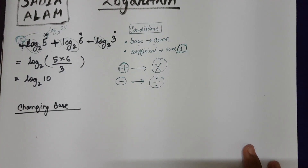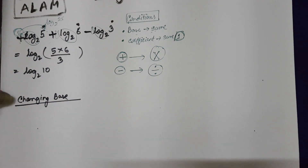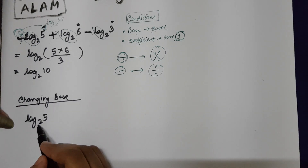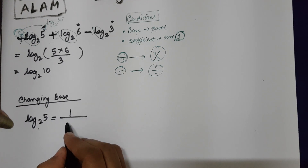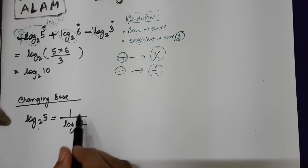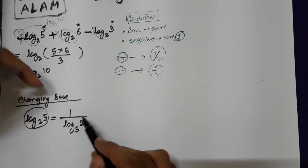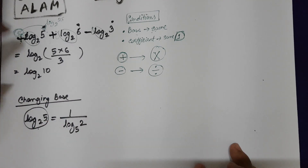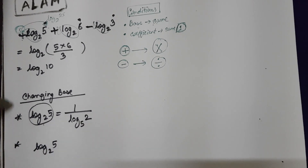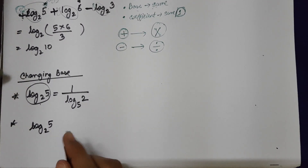Next, I will show some examples of changing the base of a log. Suppose you have log 5 base 2 but for a specific math you need 5 as the base. All you need to do is take the reciprocal — then 5 becomes the base and 2 becomes the number. If you take the reciprocal, the number and base swap positions. But if you need 7 as the base, which is a completely different term, that requires a different approach.